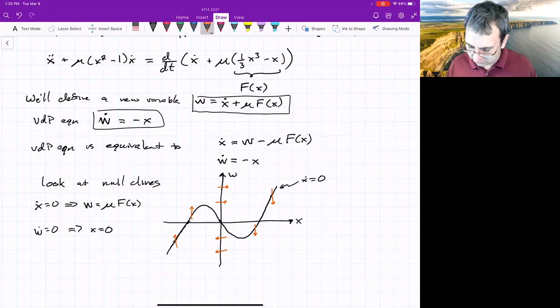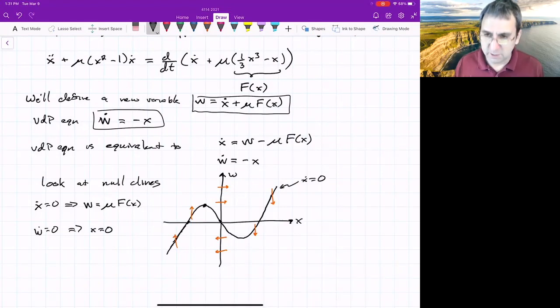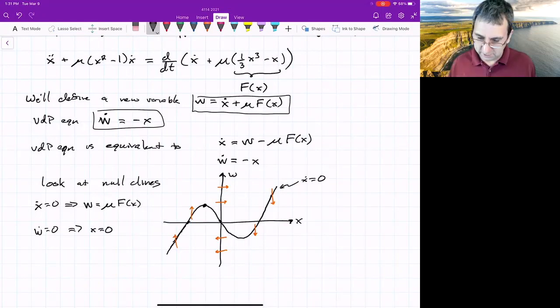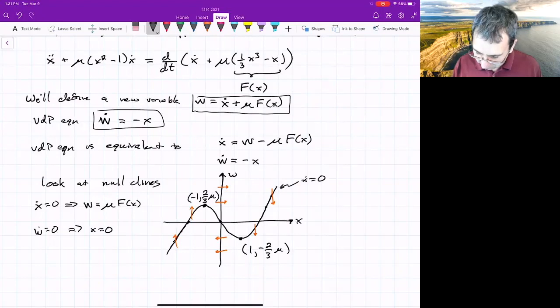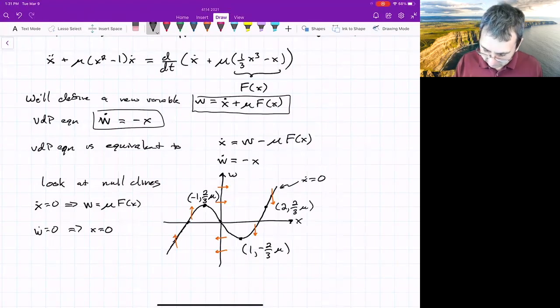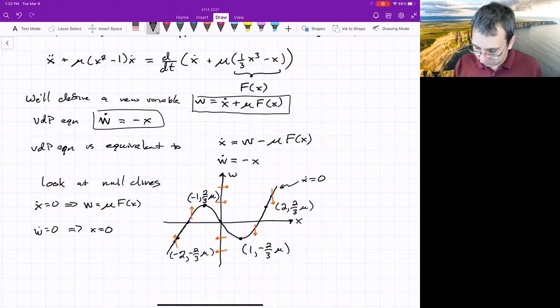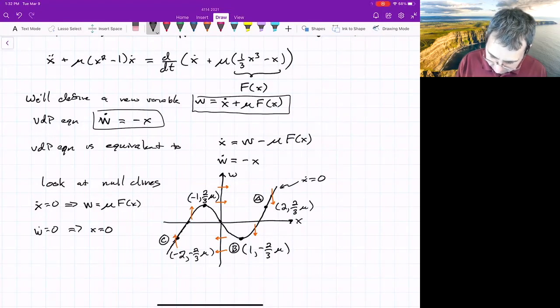It's useful to look at some of these important critical points of f. So if we look at what's this point here, this point is actually at, if you look at the peak of that, that's at negative one, x equals negative one, but it's at two thirds mu. And over here, this point is at one and negative two thirds mu. We'll also define, if we look at a point over here, it's twice as far away. That's two and two thirds mu. And then down here, here's negative two and negative two thirds mu. And we'll label those points. Maybe we'll call this point, maybe starting from up here, here's A, here's B, here's C, and here's D.